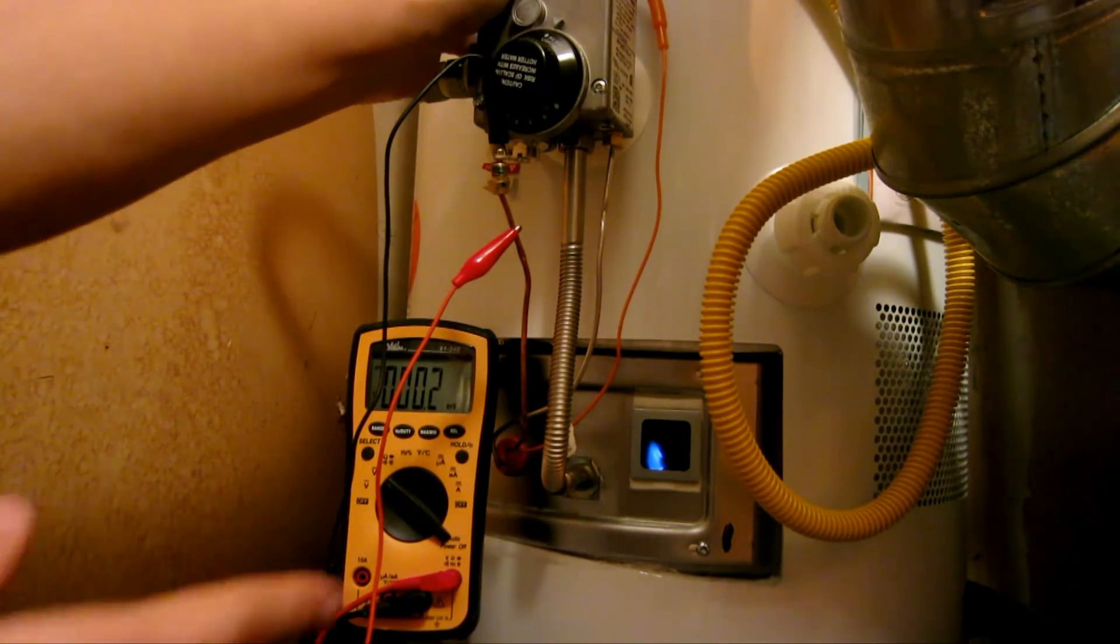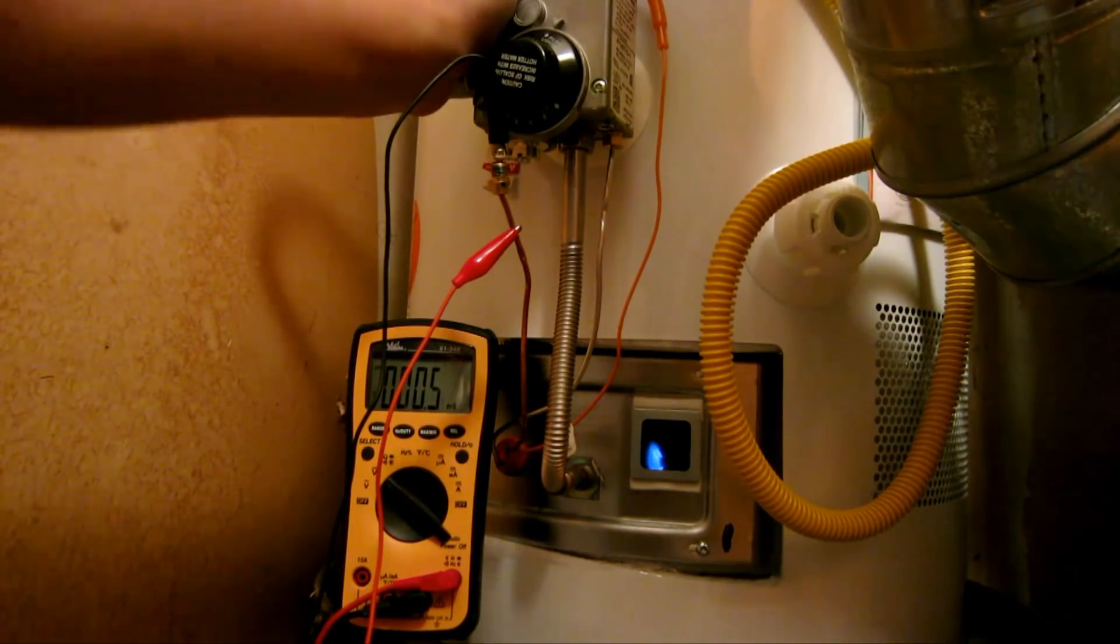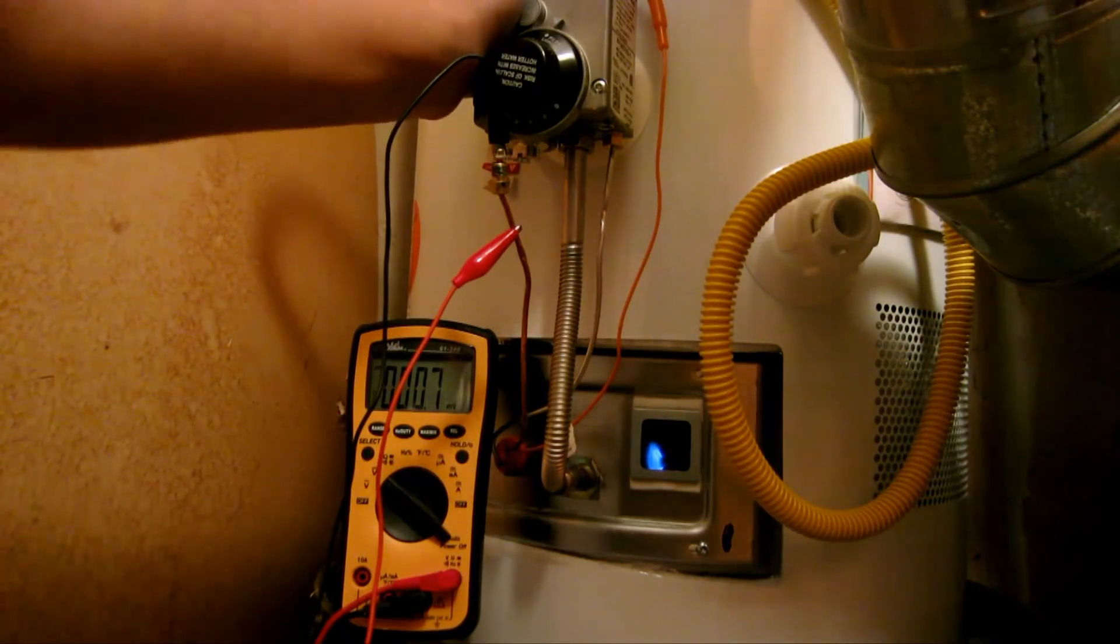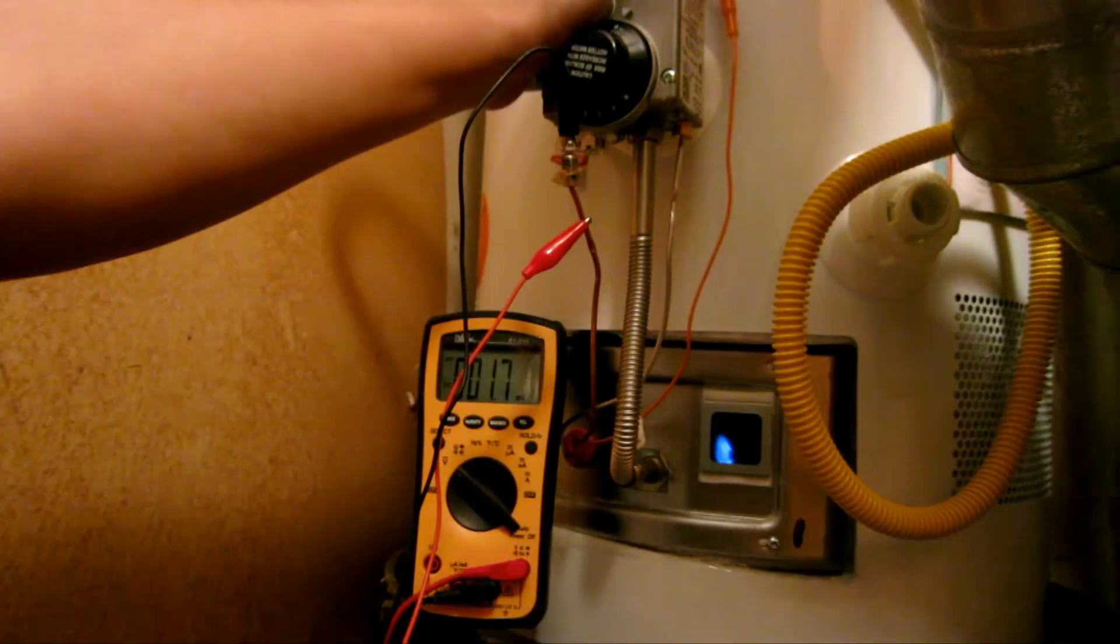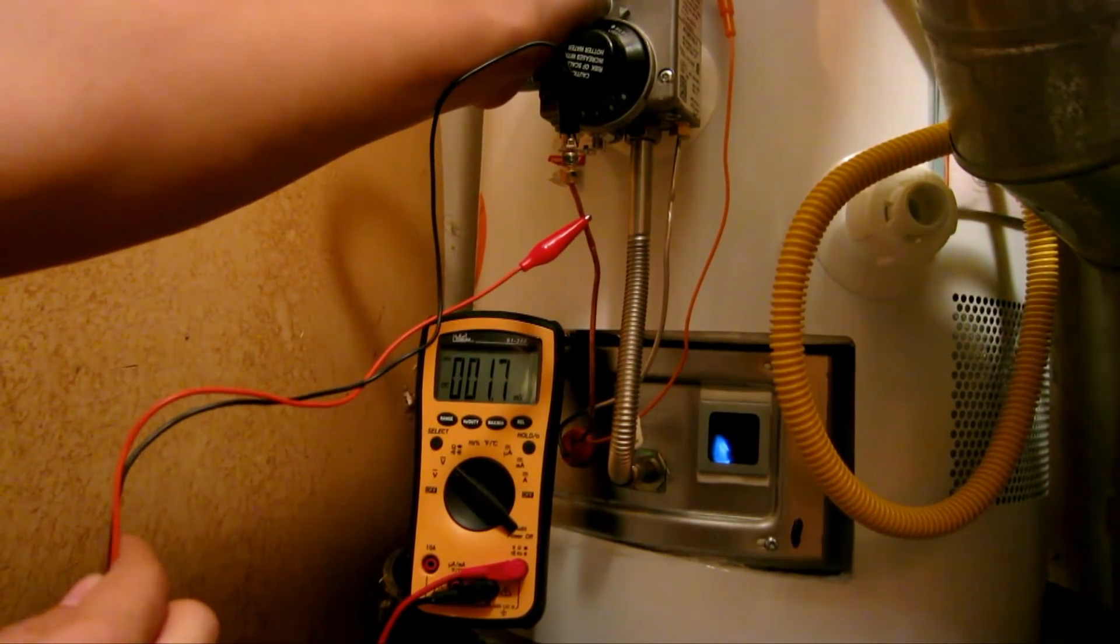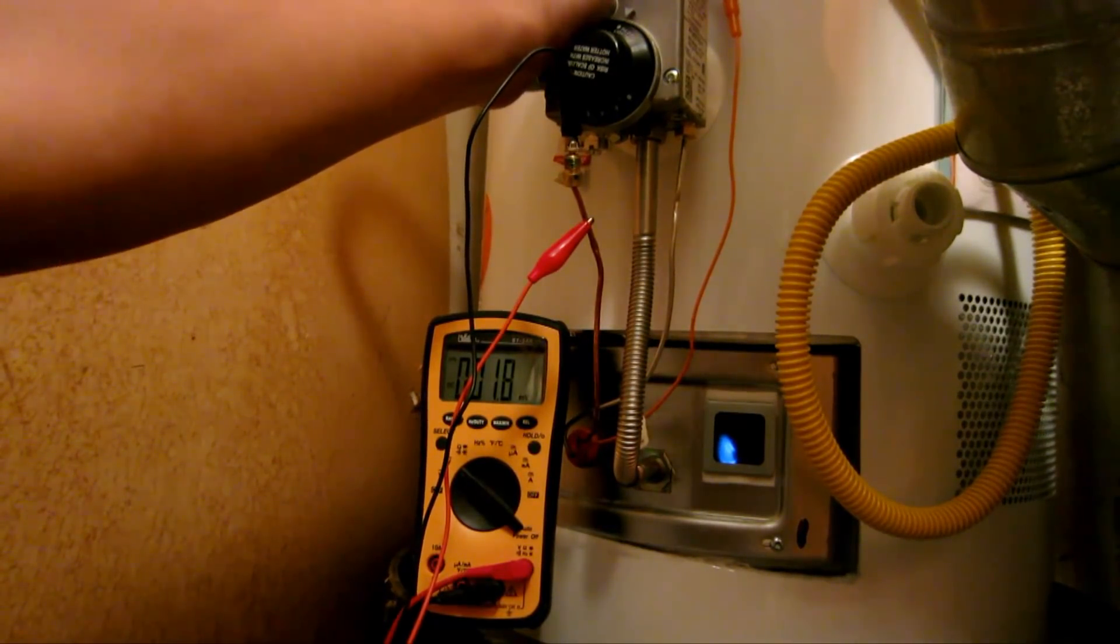Now, as a thermocoupler heats up, a slight voltage in the millivolt range starts to increase. And, I should get about 20 millivolts. So, it's been about a minute, and I only have 1.7 millivolts. That alone is a problem, because I need to have 20. So, I think I found the problem.